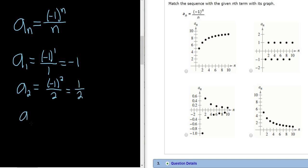Let's do one more, a sub 3. This will be negative 1 to the third power over 3. And negative 1 to an odd power is always negative 1. And then here we have a 3.